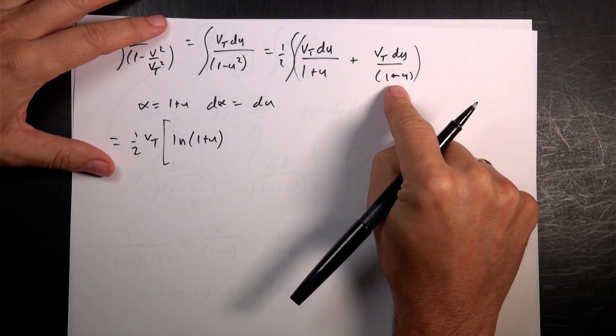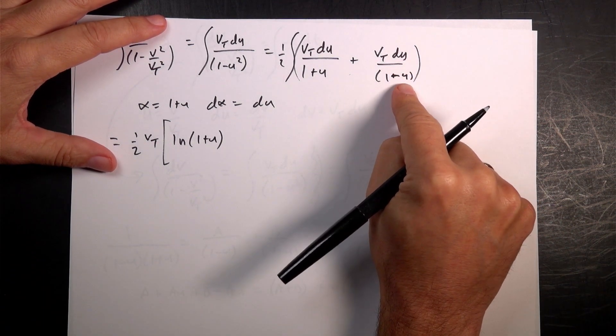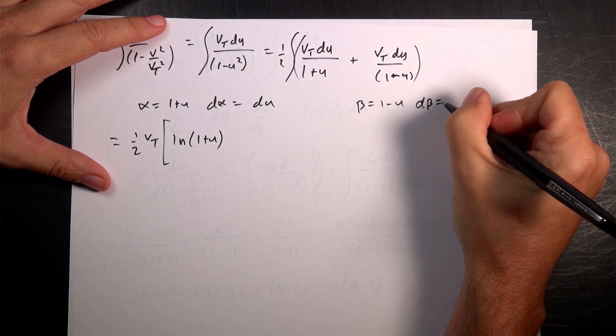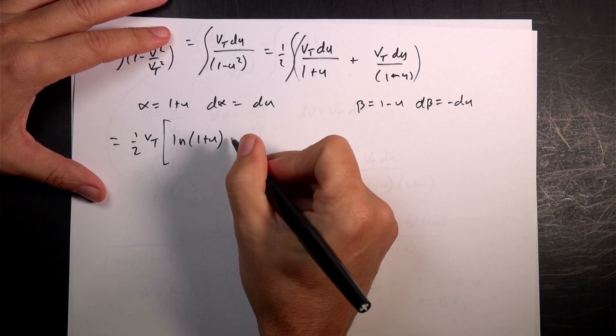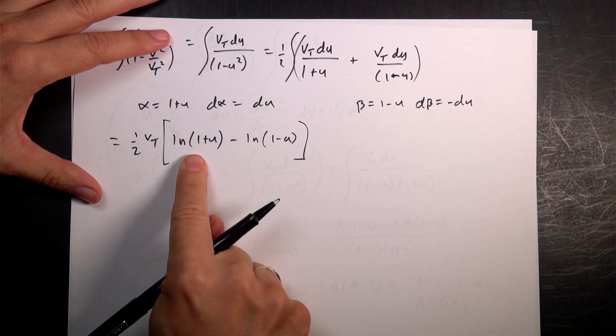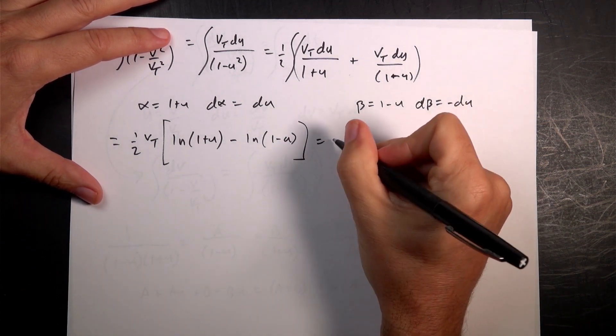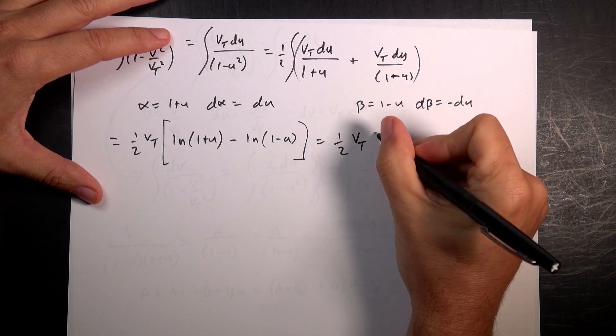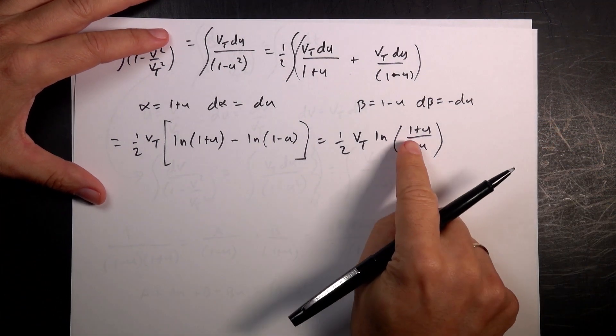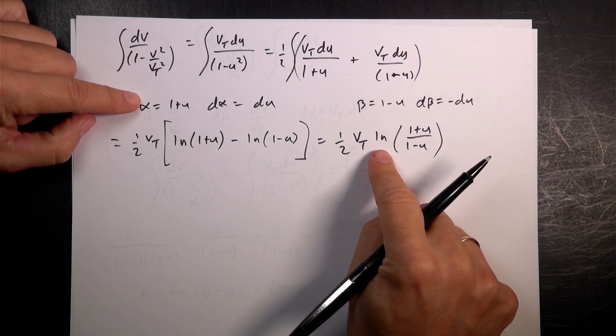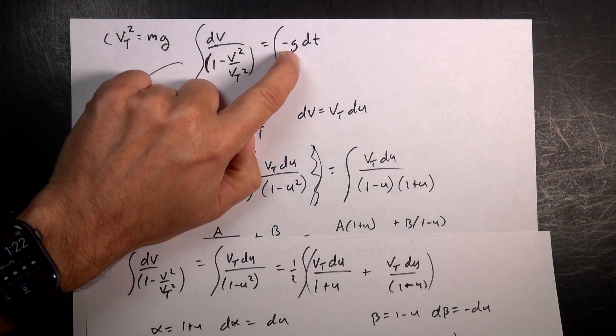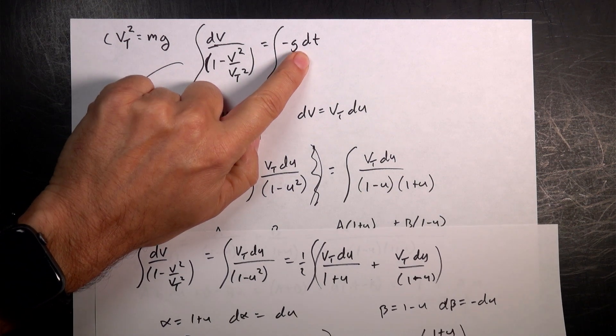Now over here, I could do the same thing, but now d, if I say alpha is 1 minus u, then, so let's write that out as beta. Beta is 1 minus u. d beta is negative du. So I'm going to get a negative term up here. So I'm going to get minus ln of 1 minus u. And then I have a difference of natural logs. I can write that as 1 half vt natural log of 1 plus u over 1 minus u. Now I need to put back in my value for u. And then I need to integrate the other side of the equation, which is trivial. The integral of negative gt, dt is negative gt plus the constant.